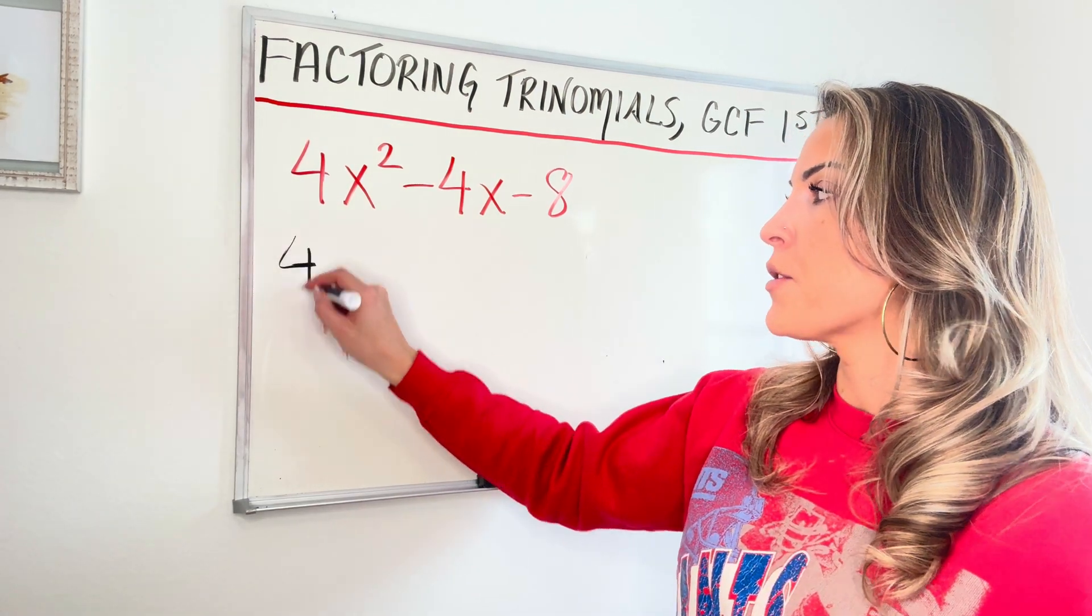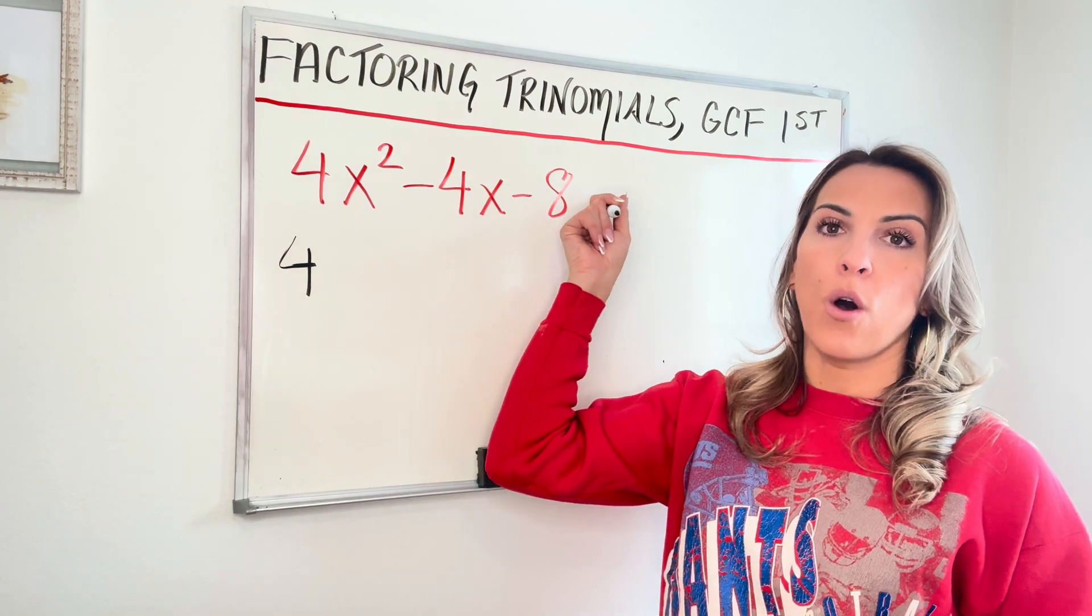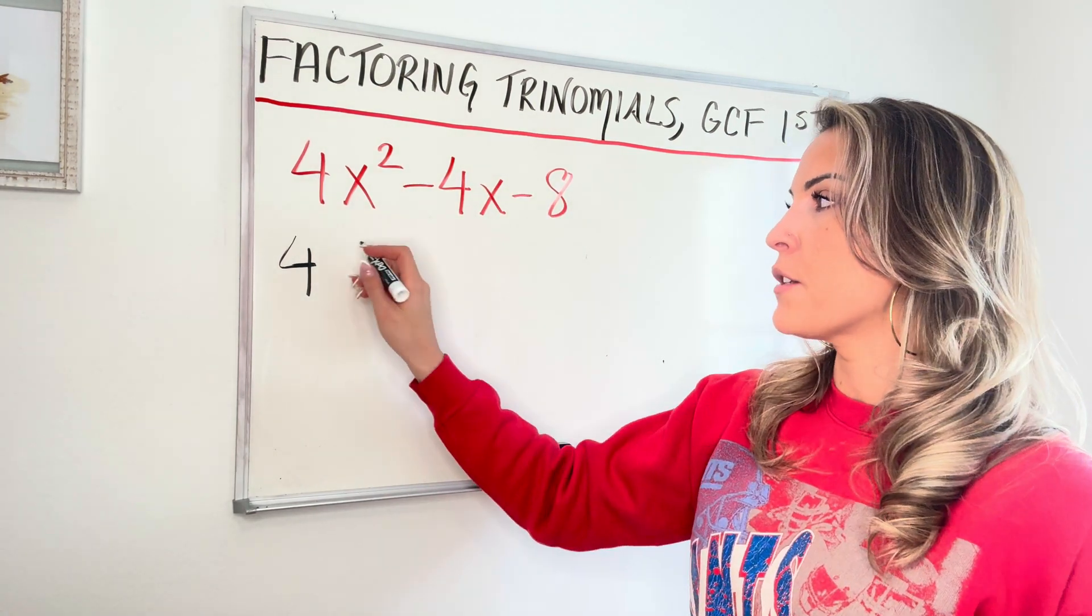As far as the variables are concerned, again, I can't factor out any variable because all the terms don't have one. Alright, so my GCF is four.